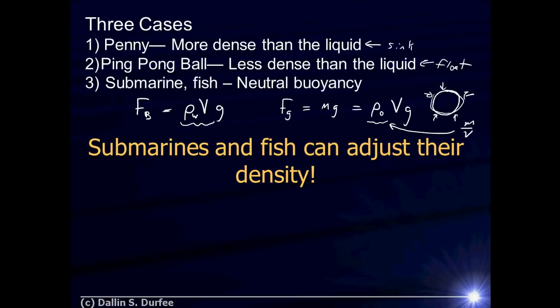Neutral buoyancy is what you want in a submarine or a fish. You don't want to constantly use a propeller to maintain depth. A submarine or a fish will have a way to adjust buoyancy — taking in or expelling water, changing its volume. A fish has an air bladder it can use to expel air and become more dense, or it can pull in water to replace air. Once your average density equals the density of water, you've achieved neutral buoyancy, and the buoyant force will be exactly canceled by gravity.